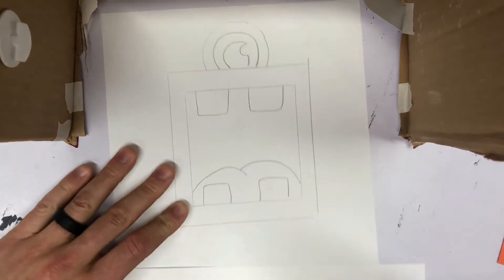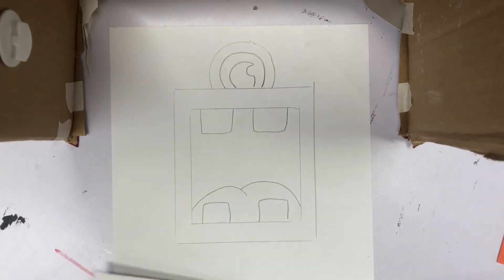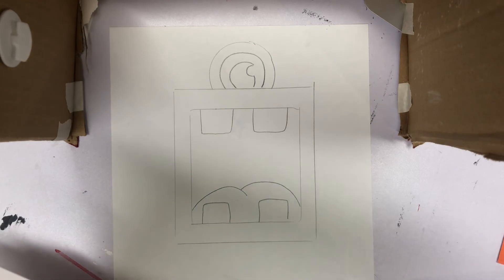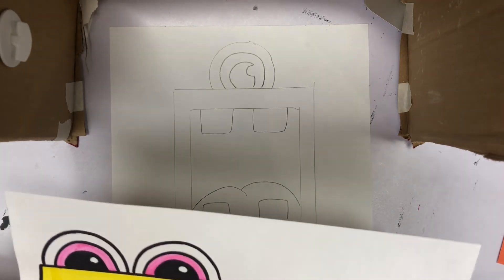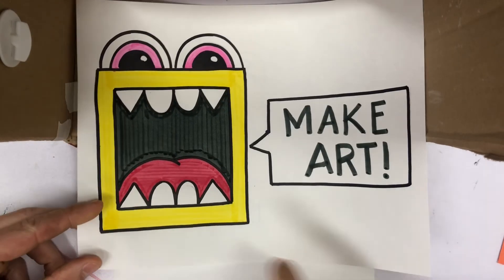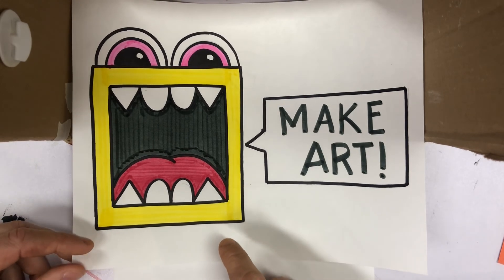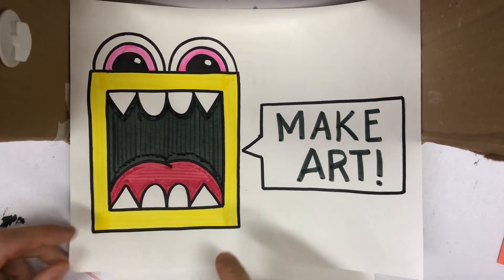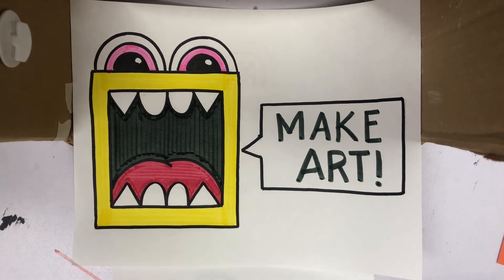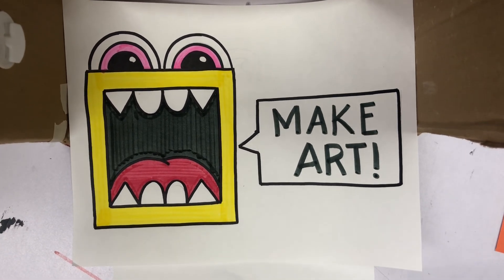After you get this far where you have your details, that's when you're going to want to go in with markers and color. A black marker would look best, it's going to help it stand out, but then the other colors that you choose are up to you. Good luck! I know you're going to make some awesome art.